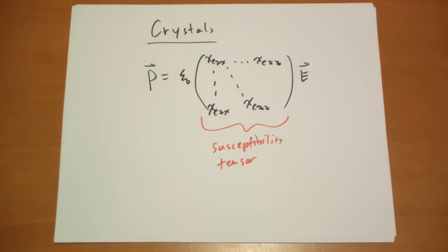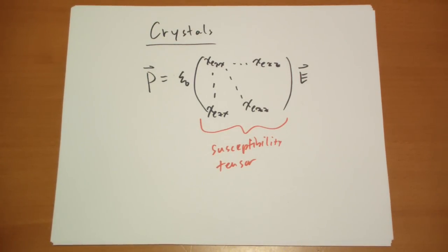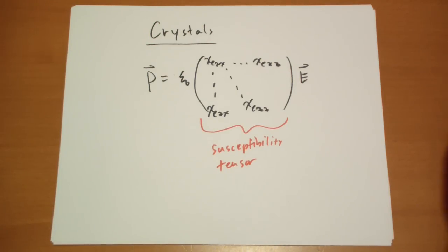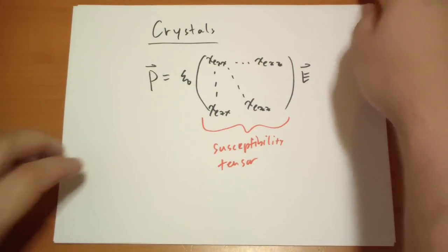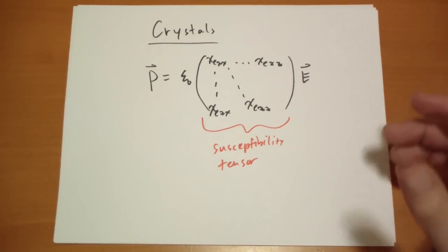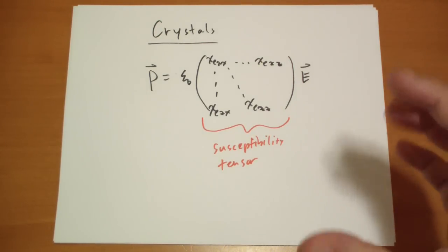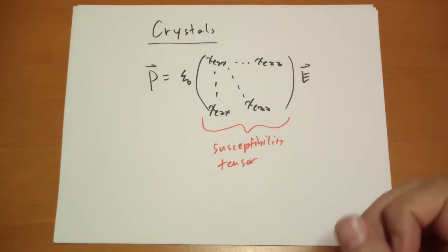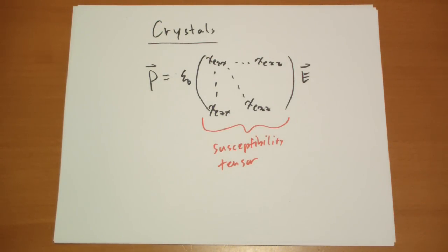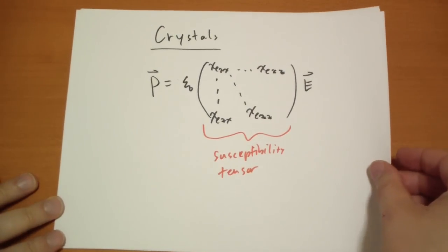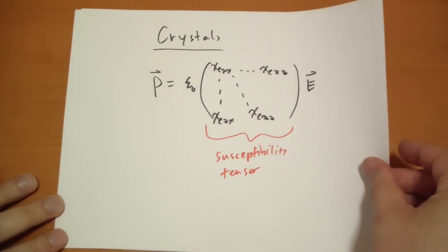We covered a lot of topics very quickly. Go back and review, memorize the susceptibility, permittivity, and dielectric constant and how they relate. Remember this only applies to linear dielectrics, and that last section only applies when the dielectric is constant everywhere. Hope you have a good time — take care and bye.